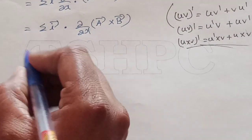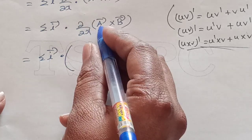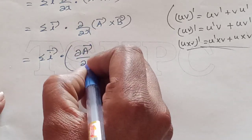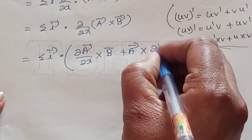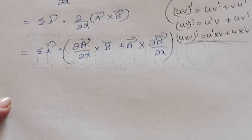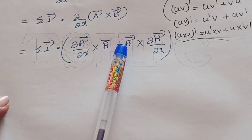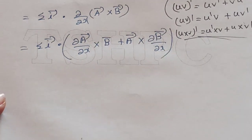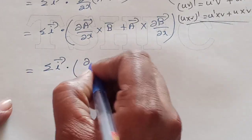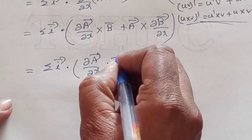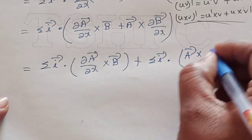Applying the uv rule, we get sigma of i vector dot [(∂a/∂x)×b + a×(∂b/∂x)]. Separating the dot product over addition gives: sigma i vector dot [(∂a/∂x)×b] plus sigma i vector dot [a×(∂b/∂x)].